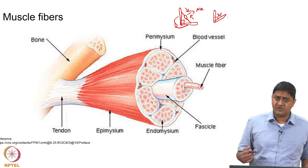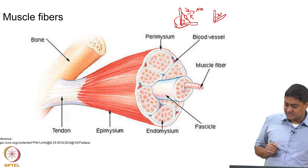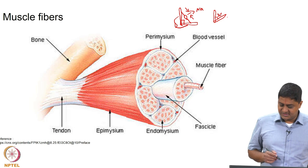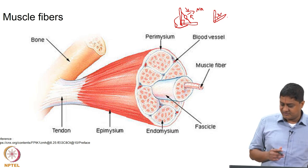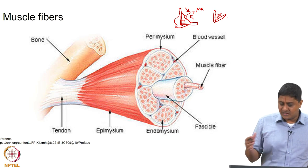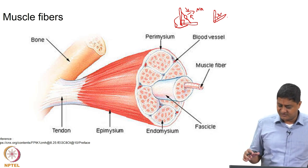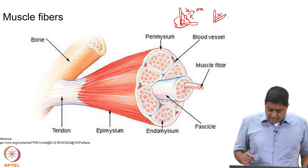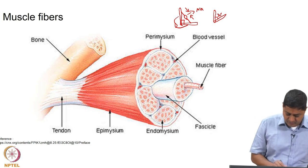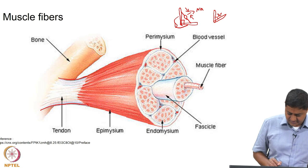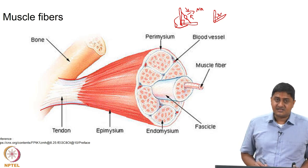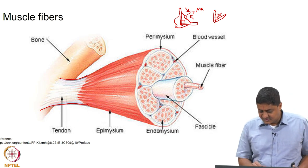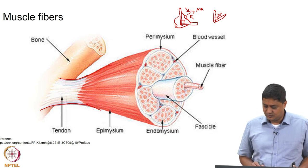How do muscles contract? Before we go into muscle contraction, let us understand the structure of muscles — briefly, since this is a neuroscience course. A muscle attaches to a bone via tendons. Tendons are composed of elastic material such as collagen and elastin, and these continue on to attach to the muscles.